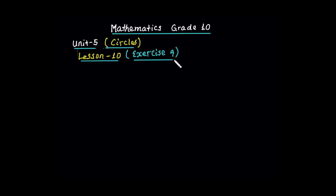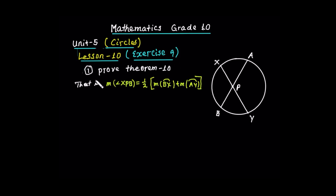Theorem 10: If two chords XY and AB intersect at a point P, then the measure of angle XPB is half the measure of arc BX plus the measure of arc AY, which is the arc opposite to it.